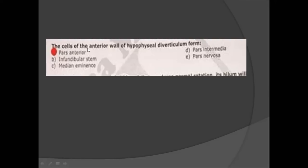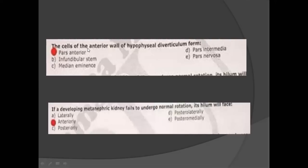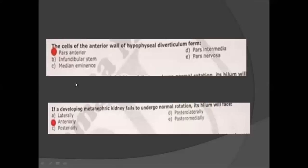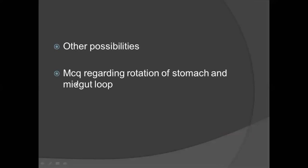If a developing metanephros kidney fails to undergo normal rotation, you can see that it normally rotates 90 degrees anteriorly toward the medial wall. Other possibilities include questions regarding the rotation of the stomach or rotation of the midgut loop.